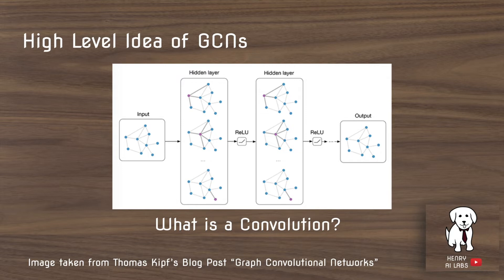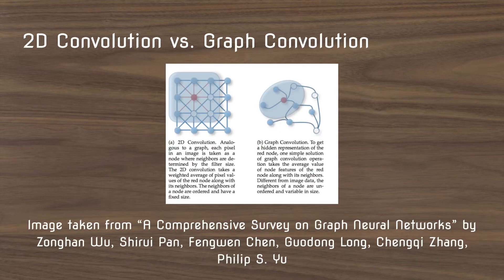So the high level of GCNs, and why it's called graph convolutional networks, is this idea of a convolution. Now to understand this, we'll compare graph convolutions with image convolutions.